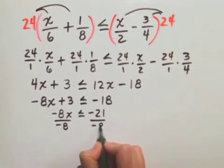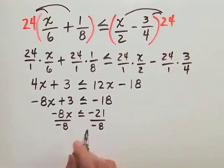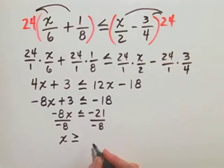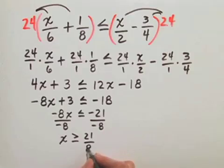Now remember, when you multiply or divide an inequality by a negative number, you reverse the direction of the inequality. So x is greater than or equal to positive 21 over 8.